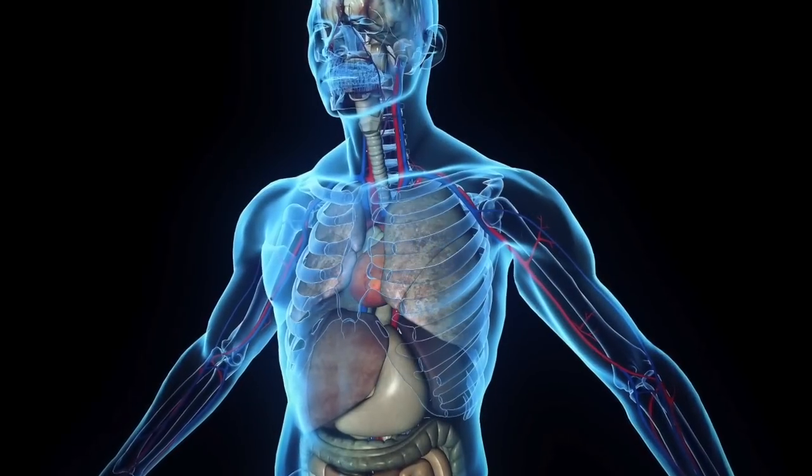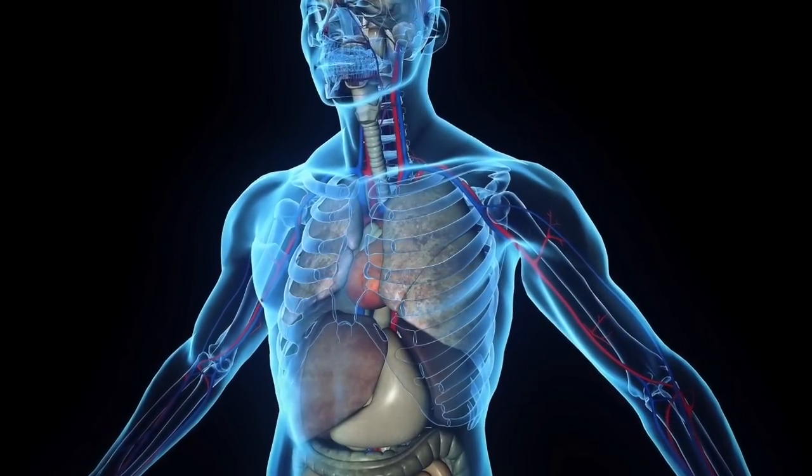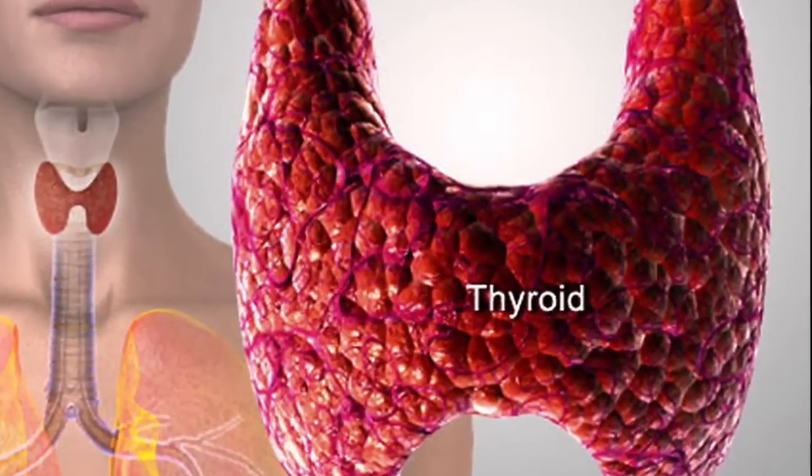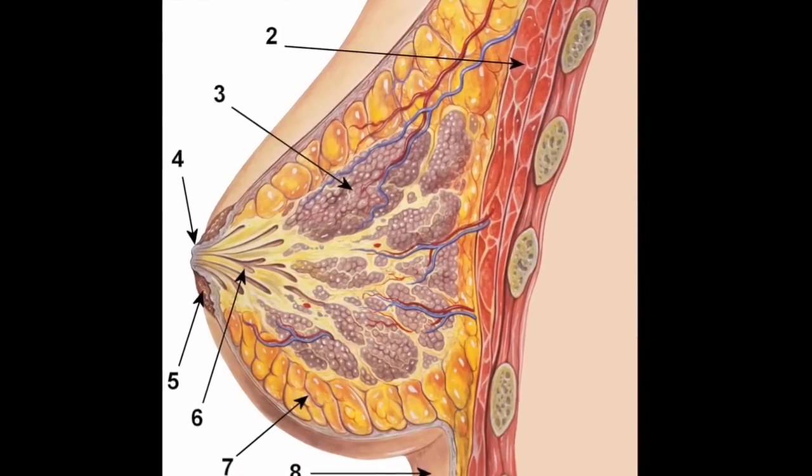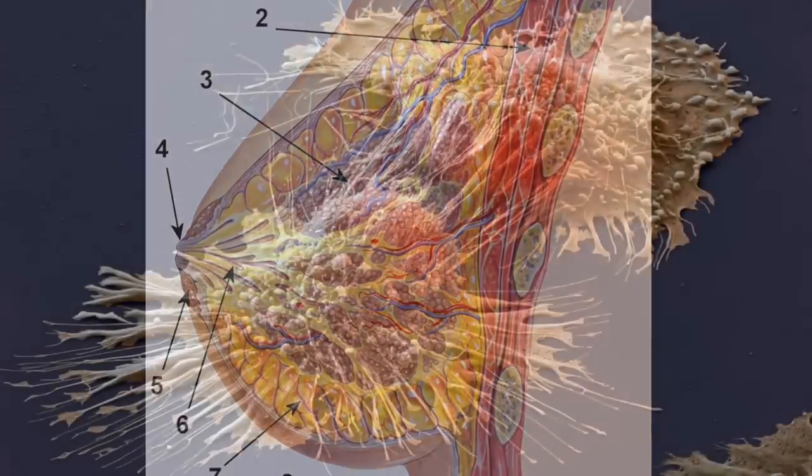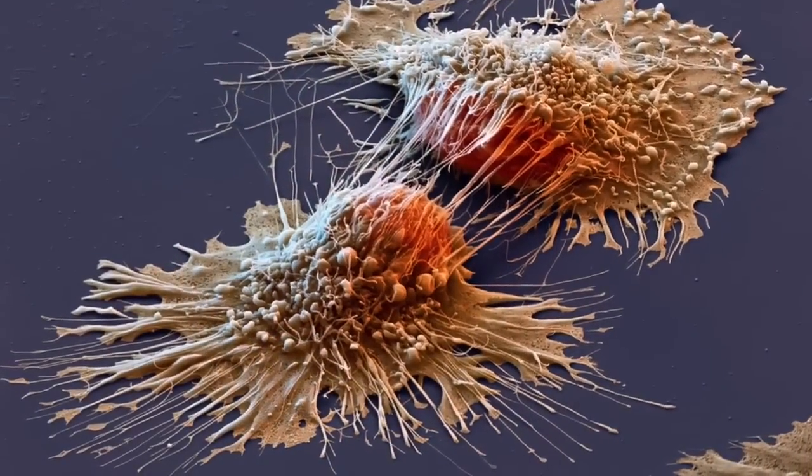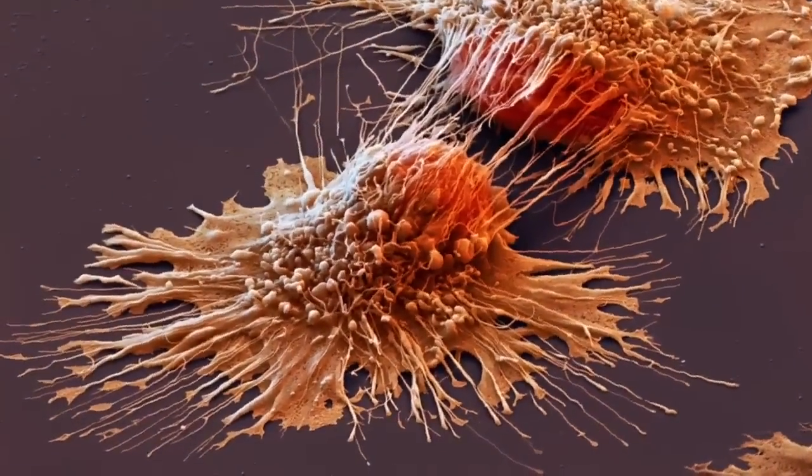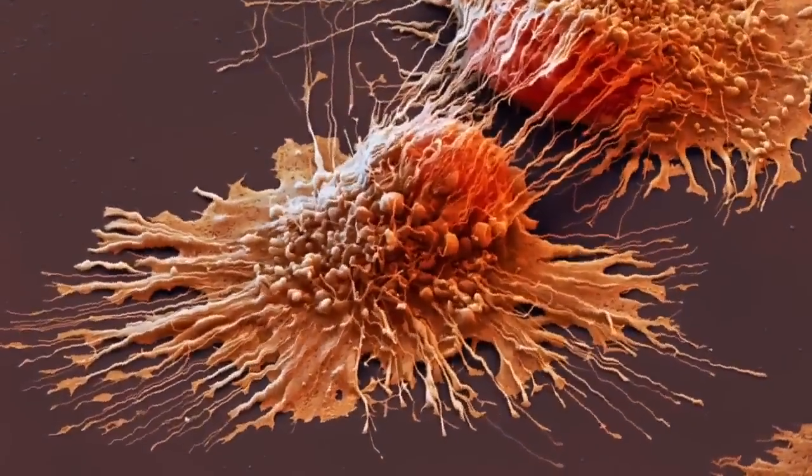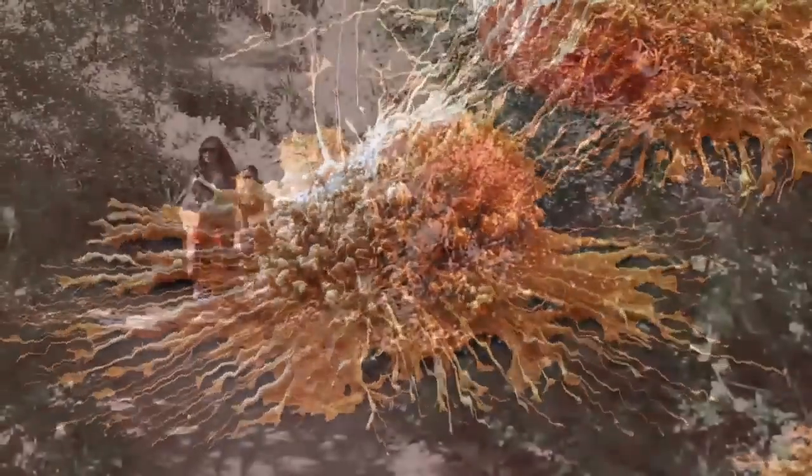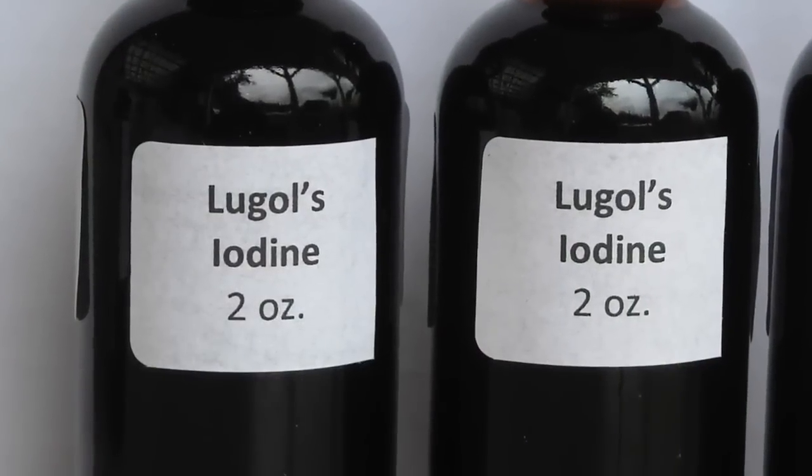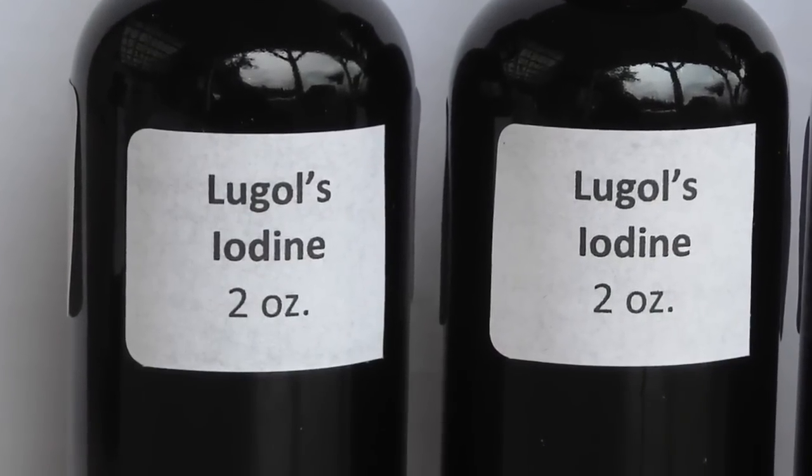Today, we know that different tissues respond differently to the two forms of iodine. The thyroid gland, for instance, primarily utilizes iodide, while breast tissue prefers iodine. The anti-cancer effect of iodine is mostly based on the iodine form, whereas the iodide form, the one available in table salt, is much less effective. This means that iodine sufficiency is best achieved when we use both iodine and iodide, as can be found in Lugol's solution.